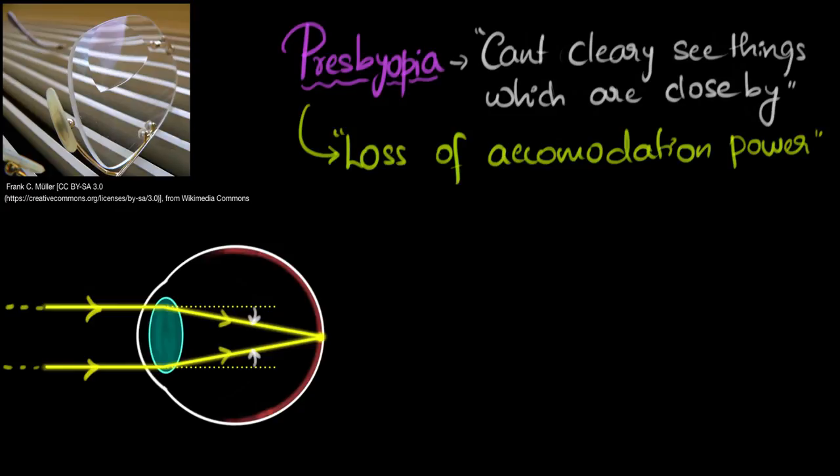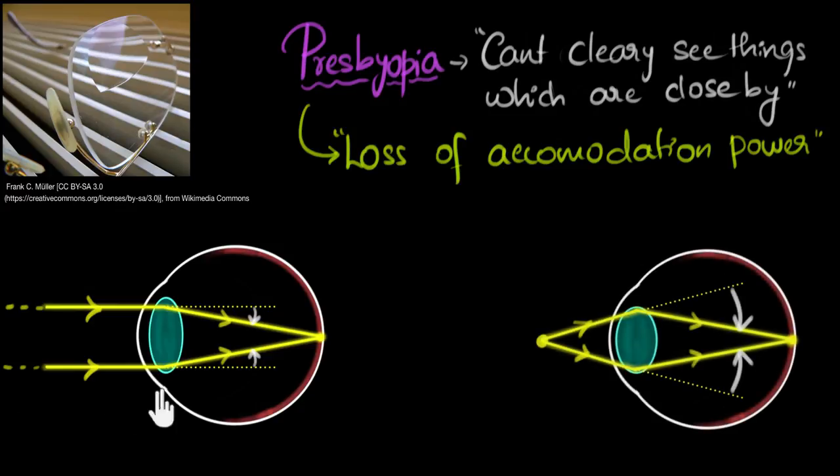But, if you're looking at things which are close by, now the incoming light is no longer parallel, they are diverging away. And as a result, to again focus them onto the retina, notice now the bending required is more, and so more optical power is needed. This is now achieved by the ciliary muscles over here, which are not shown in the diagram. These ciliary muscles push on that lens, and then the lens bulges out, increasing its curvature, and thereby increasing the optical power. This is called as accommodation.